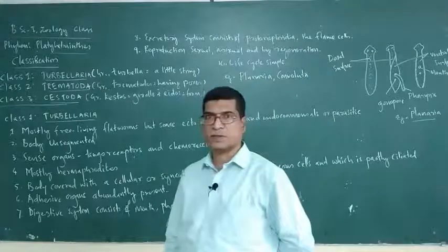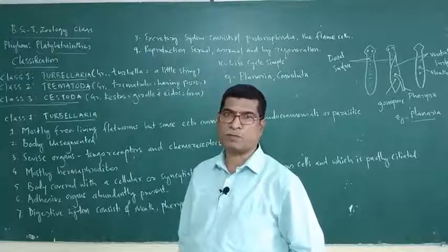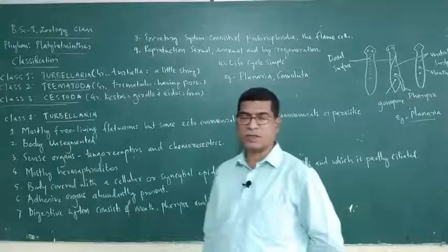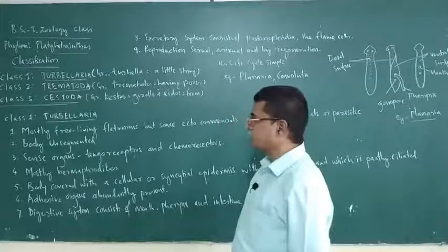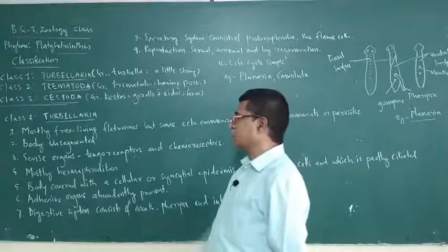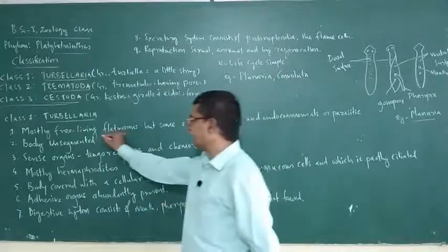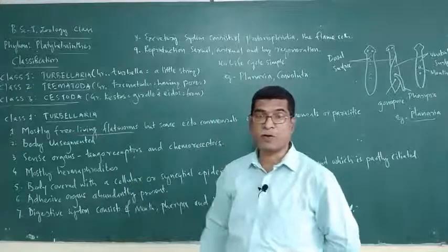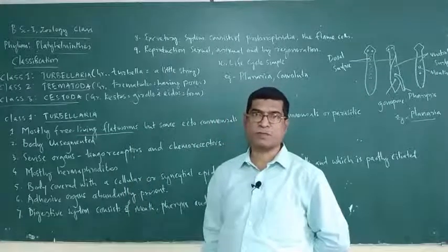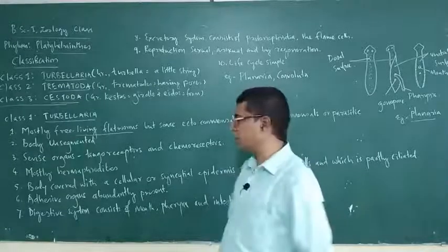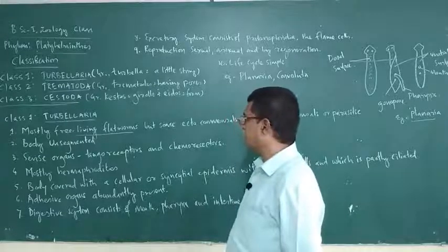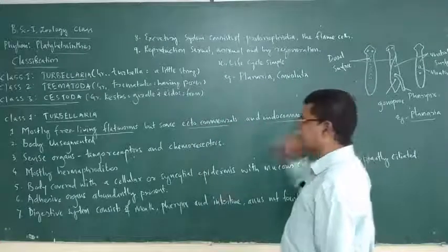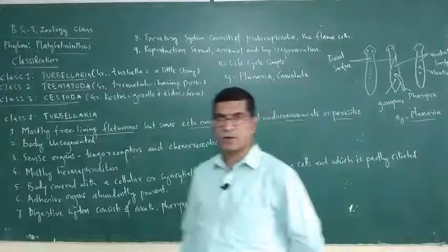Let us discuss the first class of Phylum Platyhelminthes — Class 1: Turbellaria. General characteristics: mostly free-living flatworms. They are free-living forms, not parasitic forms. Mostly they are free-living forms, but some ectocommensals, endocommensals, and parasitic forms also occur.